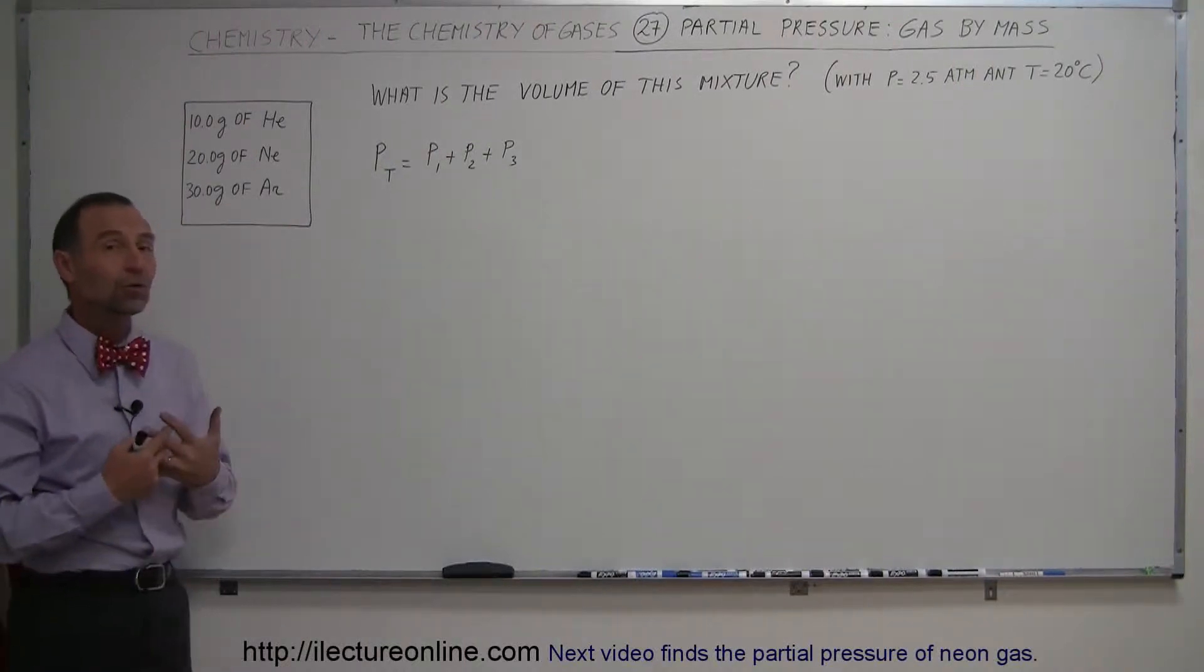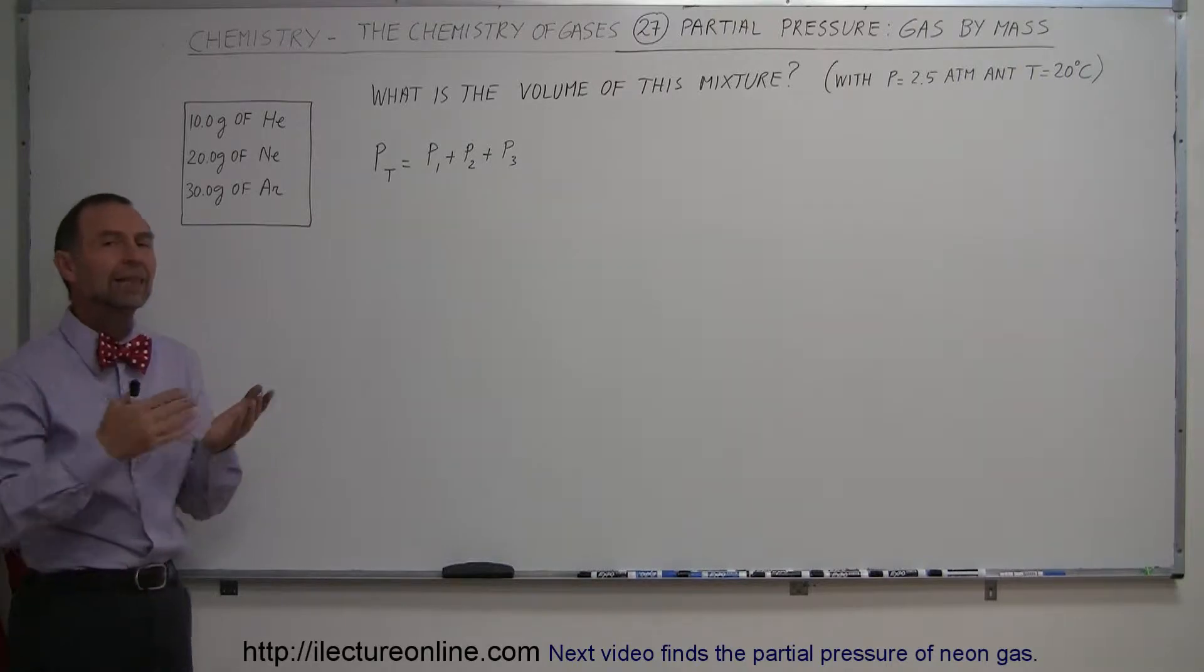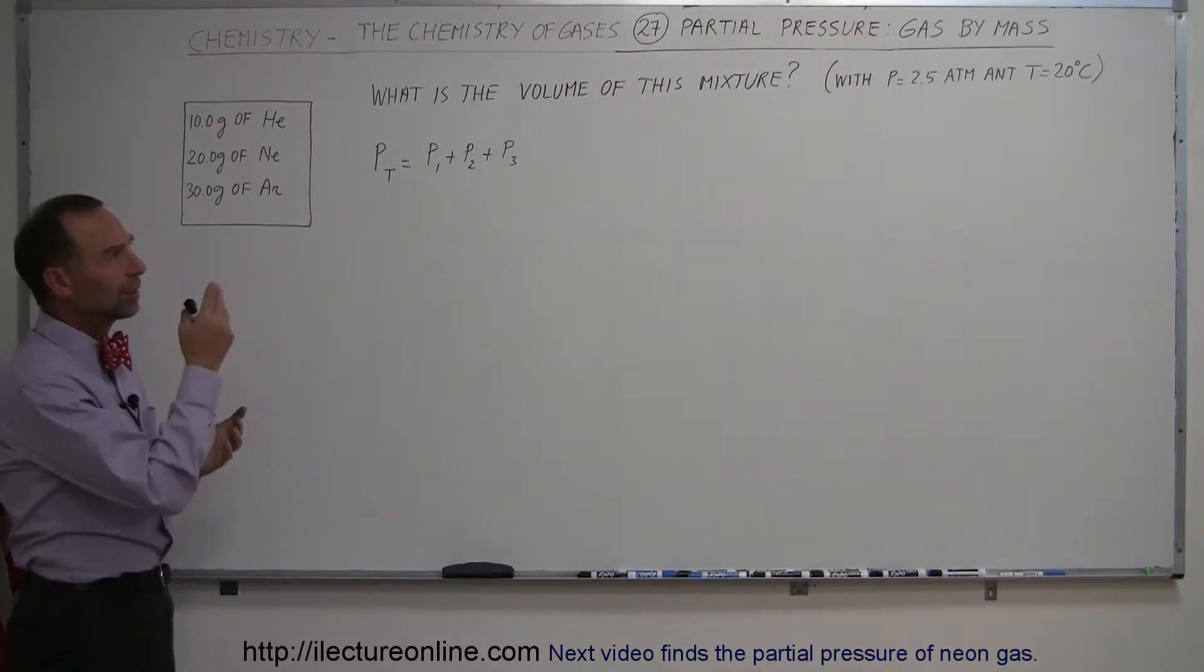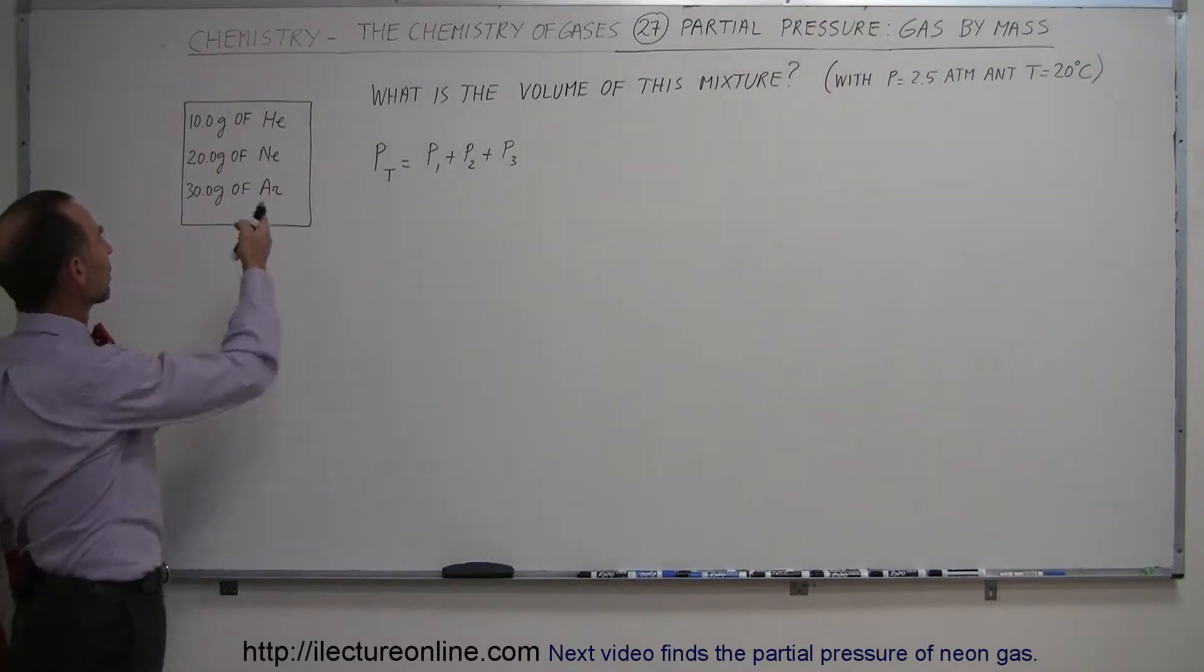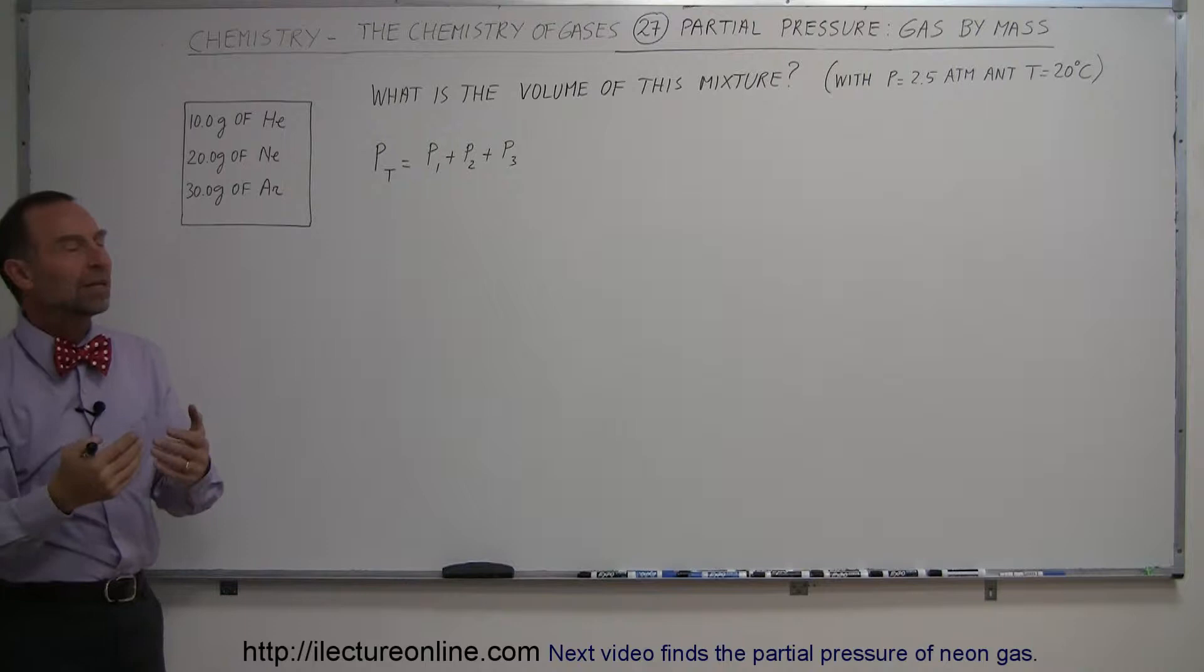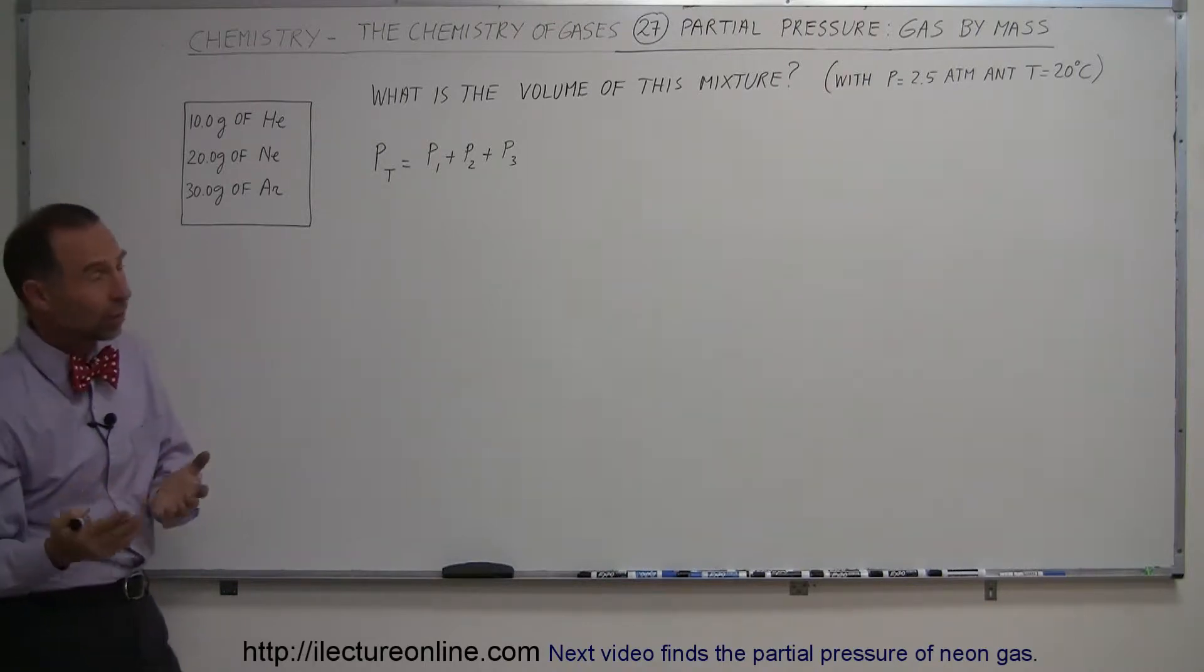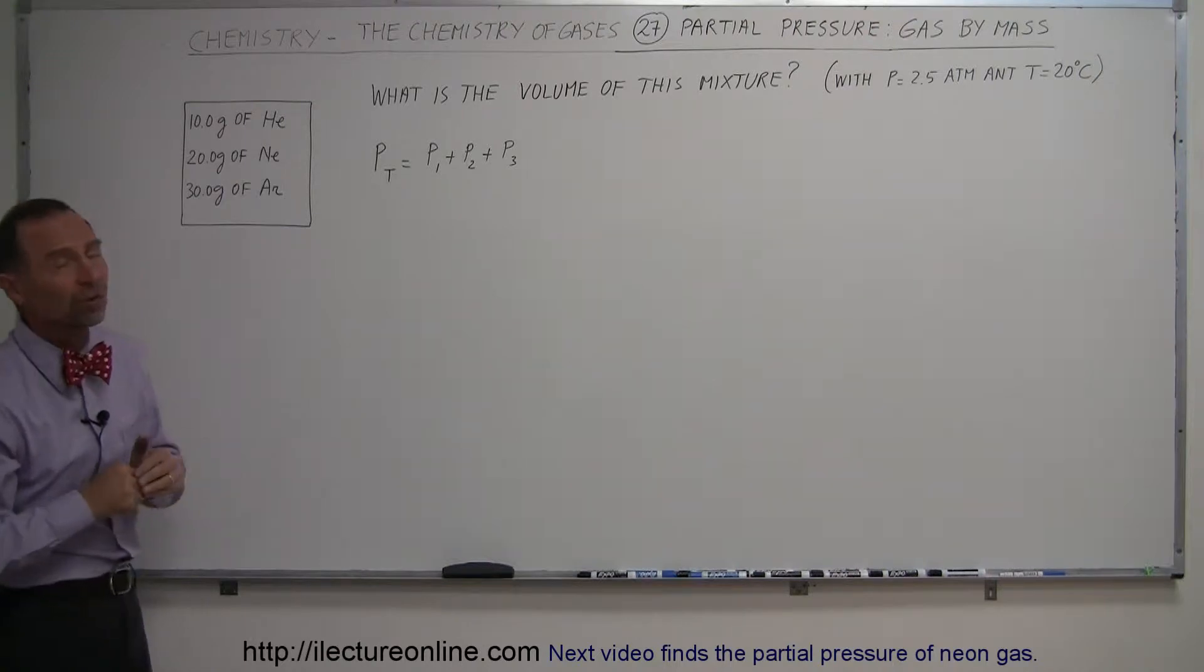Here's another way we can use the partial pressure concept, or Dalton's law, to calculate things about gases. If we're given gases by mass, a certain mixture with a certain amount of grams of each gas, what will be the volume of this mixture, assuming the total pressure is 2.5 atmospheres at a temperature of 20 degrees Celsius?